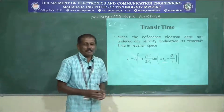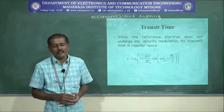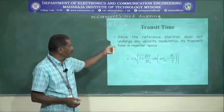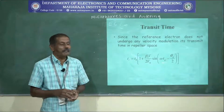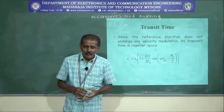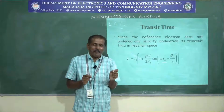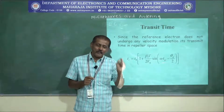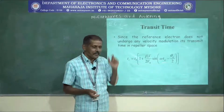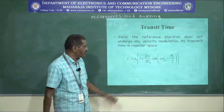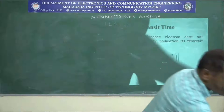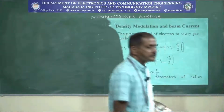Since the reference electron does not come across any positive or negative potential, it does not undergo any velocity modulation. So its transit time in the repeller space is different from electrons that come across positive or negative fields. The transit time for the reference electron is calculated from its own particular equation.